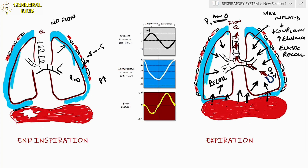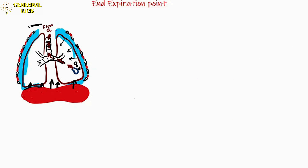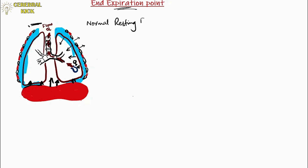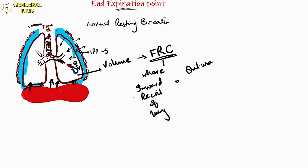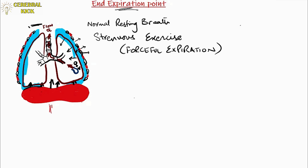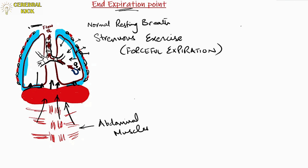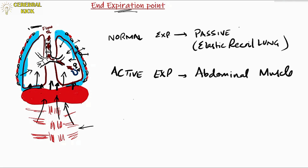The endpoint of normal expiration is the functional residual capacity (FRC) — the volume remaining in the lungs where inward lung recoil balances the outward chest wall recoil. During strenuous exercise, forceful expiration recruits abdominal musculature, which pushes the diaphragm further upward and further compresses the lungs, with the residual volume being the minimum remaining. In summary: normal expiration is passive and depends on elastic recoil; active expiration requires abdominal musculature.